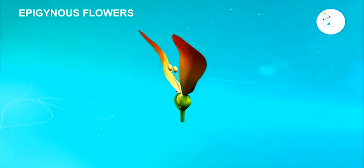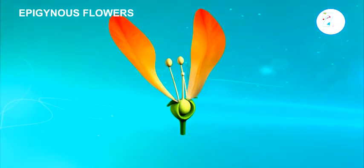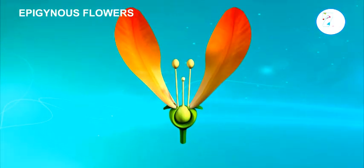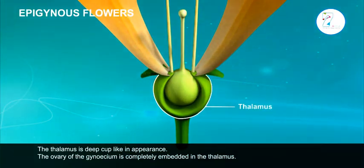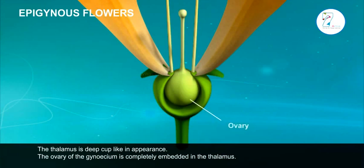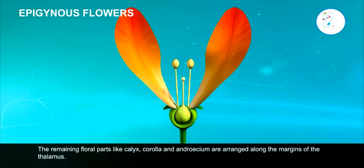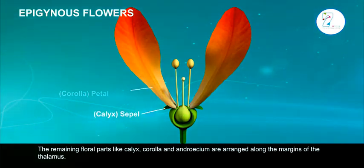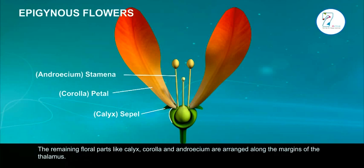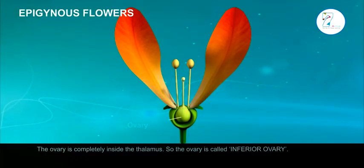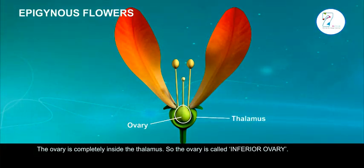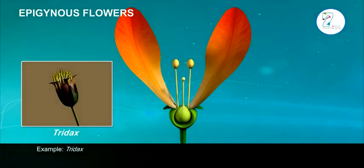3. Epigynous flowers. The thalamus is deep cup-like in appearance. The ovary of the gynoecium is completely embedded in the thalamus, and the wall of the ovary is completely fused with the thalamus. The remaining floral parts, like calyx, corolla, and androecium, are arranged along the margins of the thalamus. The ovary is completely inside the thalamus, so the ovary is called an inferior ovary. Example: Tridax.